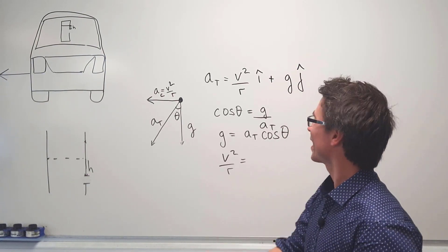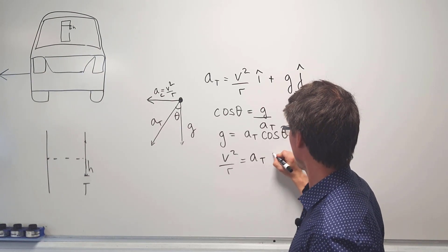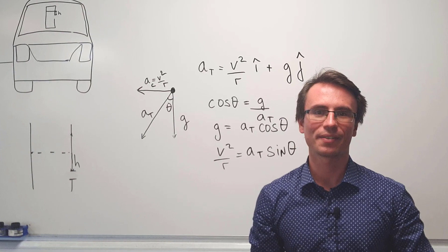Similarly we can also say that V squared over R is the opposite component, so this here will just be equal to AT sine of theta.